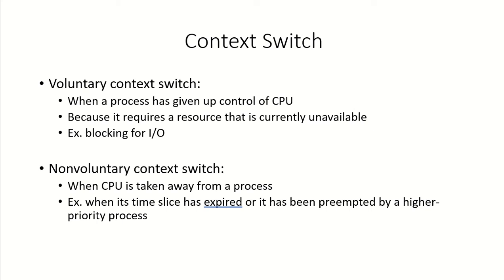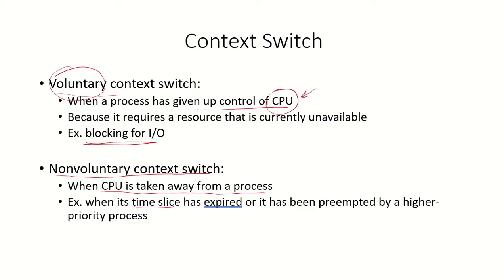The context switch can be of two types. A voluntary context switch means the process itself is giving up control of the CPU — for example, because the process has to go for some input/output and the I/O device is not currently available, so it blocks and releases the CPU. This is a voluntary context switch and the CPU can now be allocated to some other process. In a non-voluntary context switch, the system takes away the CPU from the process — for example, the time slice has expired or a higher priority process has come in, so the CPU is taken away and given to another process.